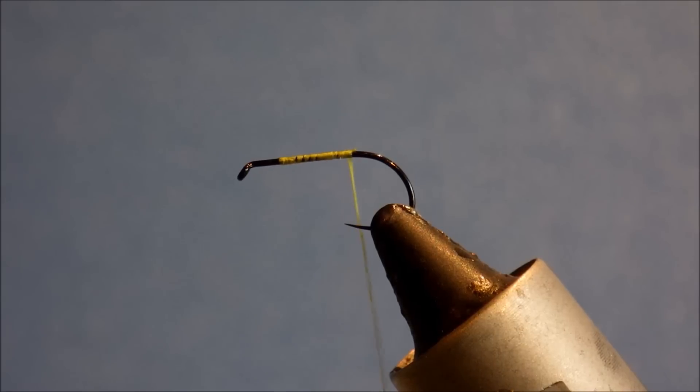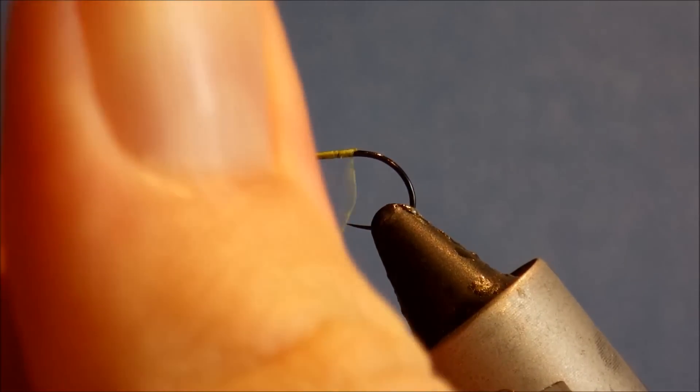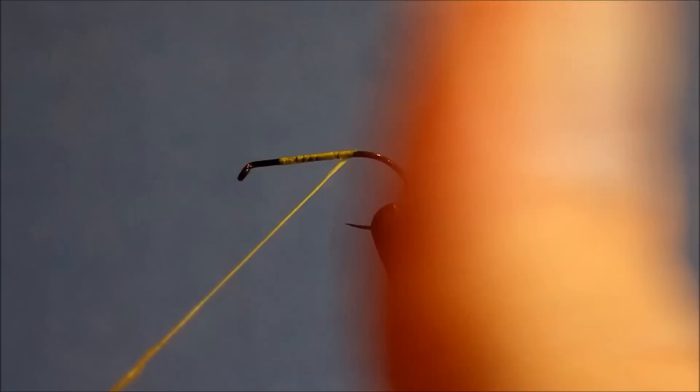For the body I'm using Superfine Dry Fly Dubbing. This is just the plain Olive, but there's a few different options - there's Dark Olive, Honey Olive, a few different Olive options. Doesn't really matter. Tie them to match what you're fishing and where you're fishing.